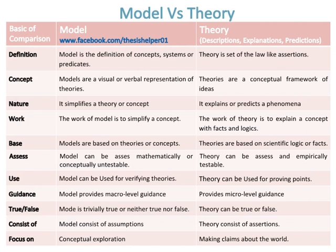A model can be assessed mathematically or conceptually, and may be untestable. Whereas, a theory can be assessed and is empirically testable. A model can be used for verifying theories. Whereas, a theory can be used for proving points.